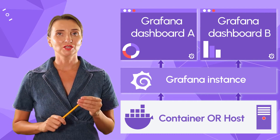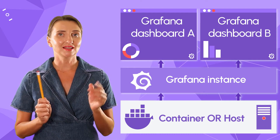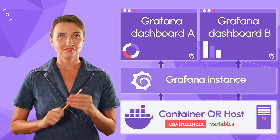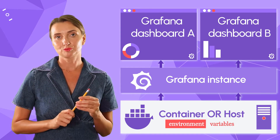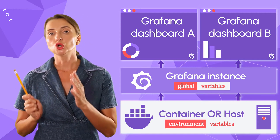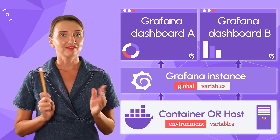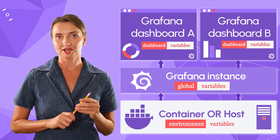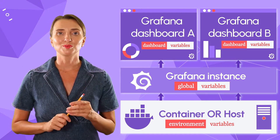Variables on each level play a substantial role in the level configuration. We use environment variables to access the container host level properties. A Grafana instance has global variables, and every Grafana dashboard has dashboard variables — but how do you work with all these variables?